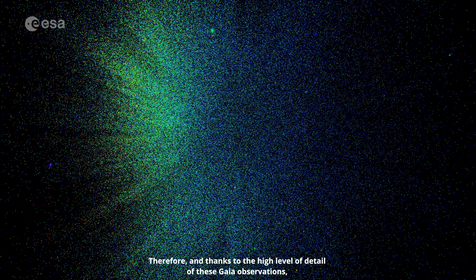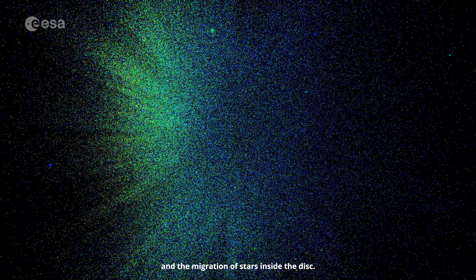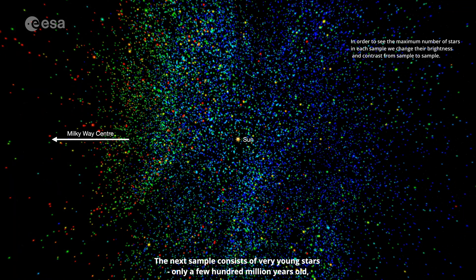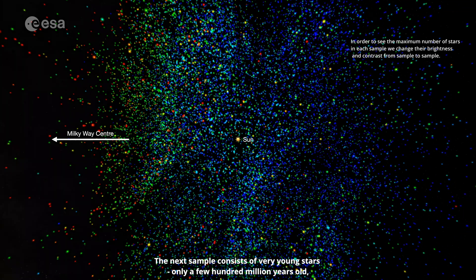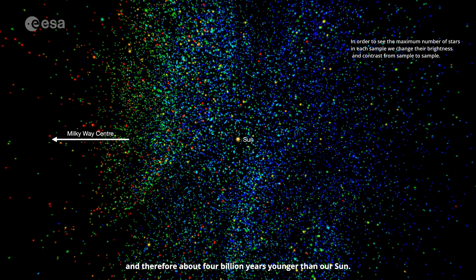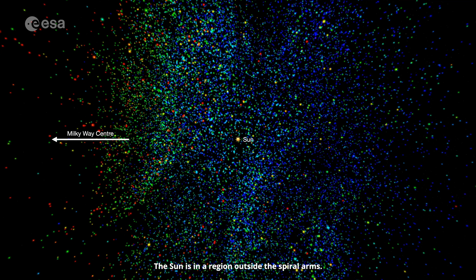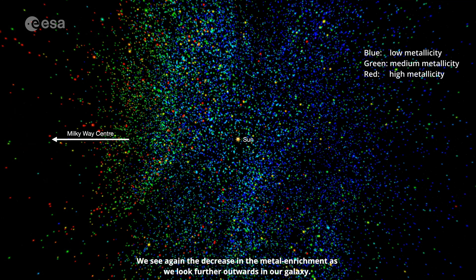Therefore, and thanks to the high level of detail of these Gaia observations, we can infer the rate at which the stars were born, the arrival of gas from the intergalactic regions, and the migration of stars inside the disk. The next sample consists of very young stars, only a few hundred million years old, and therefore about 4 billion years younger than our Sun. They are located along curves that reveal the spiral arms of the Milky Way where these stars were formed. The Sun is in a region outside the spiral arms. We see again the decrease in the metal enrichment as we look further outwards in our galaxy.